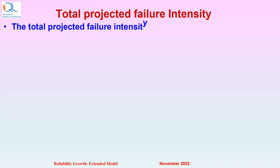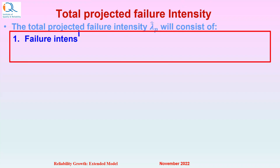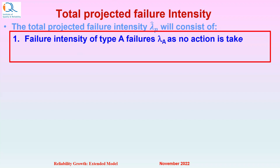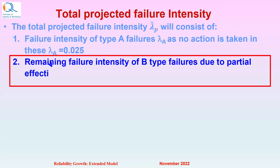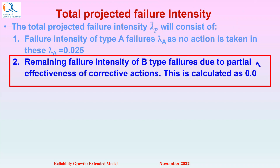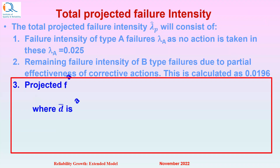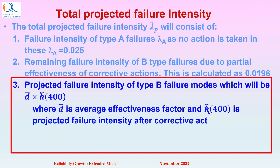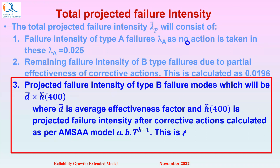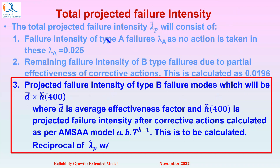Now we calculate the total projected failure intensity, lambda P, which consists of: (1) the failure intensity of Type A failures, lambda A, which remains 0.025 as no action is taken; (2) the remaining failure intensity of B-type failure modes due to partial effectiveness of corrective actions, calculated as 0.0196; and (3) D-bar times H(400), where D-bar is the average effectiveness factor and H(400) is the projected failure intensity after corrective actions calculated per the AMSAA model as A·B·T raised to B minus 1.